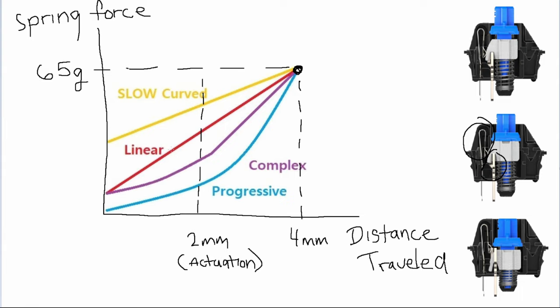Another common spring in the aftermarket are progressive springs. Progressive springs can vary in how they look. They can be shorter than linears or look like a spring that has both loose and tightly wound coils. I have an example of that shown here.